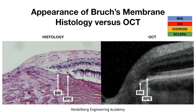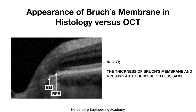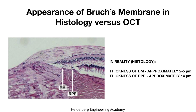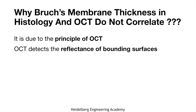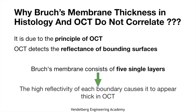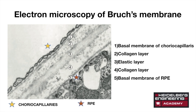Appearance of Bruch's membrane: histology versus OCT. In OCT, the thickness of Bruch's membrane and RPE appear to be more or less the same, but in reality — that is, histology — the thickness of Bruch's membrane is only one third of RPE thickness. Bruch's membrane appears thicker in OCT because OCT detects the reflectance of bounding surfaces. Bruch's membrane consists of five layers, and the high reflectivity of each boundary causes it to appear thicker in OCT. This is confirmed by an electron microscopic picture showing its five layers.